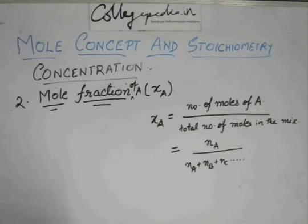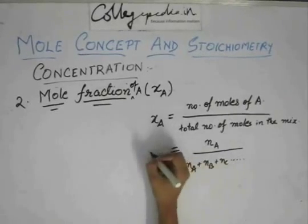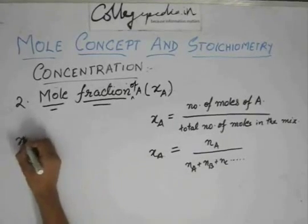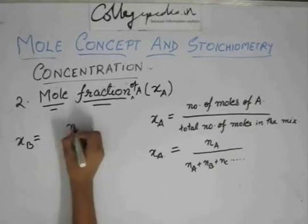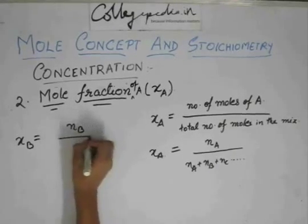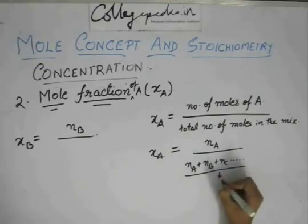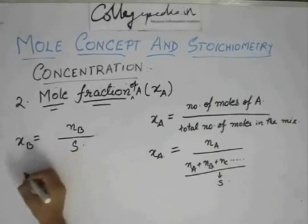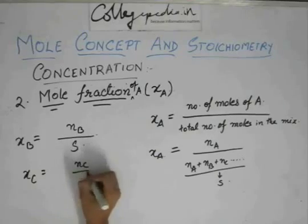And one thing if you would have noticed is that xA is this. What if you want to calculate xB, that is mole fraction of B? That would be nothing but NB by the whole thing. Let us denote this by S. So NB by S. Then again if you want to calculate XC that would be NC by S.